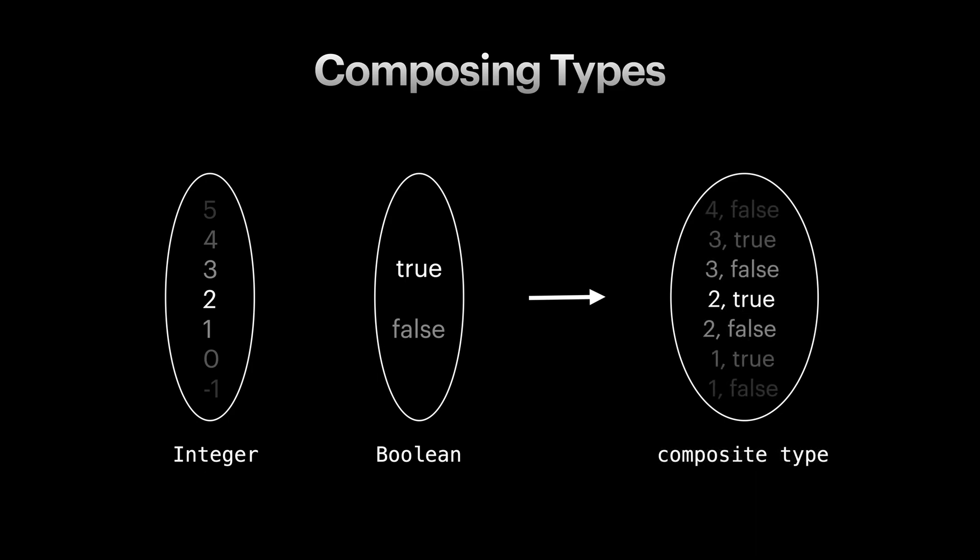The first idea that comes to mind is to maybe pair the values. So for example, we can pair the integer three with true and false and come up with two items in our new type, and we do the same for all other integers as well. For our composite type, each value inside the pair is called a field in our new type.